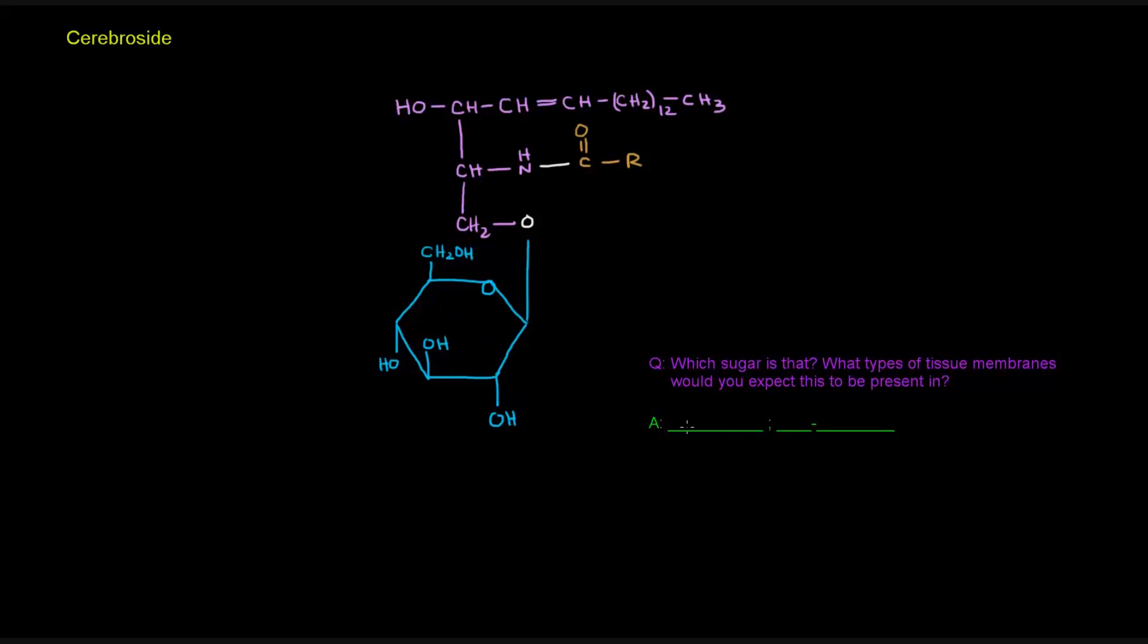Which sugar is this? Well, this sugar is glucose. And what types of tissue membranes would you expect this to be present in? We mentioned in the previous video that if the polar head group is a glucose, we would expect that to be in non-neural plasma membranes. We wouldn't expect that to be in neural plasma membranes. If this had been galactose, we would have put neural plasma membranes.